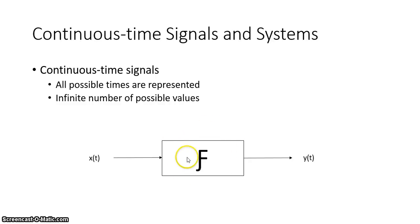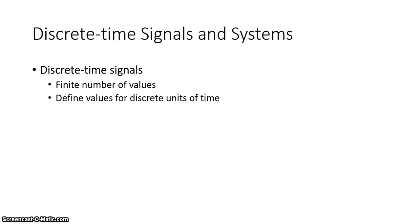So if we have that system — represented by a function — the input is x(t) and the output is y(t). For a discrete time signal, we have a finite number of values. We only have defined values for discrete units of time. For instance, we may only have values for one second, two seconds, three seconds, four seconds, but not for the times in between those — it all depends on the system or signal we're dealing with.